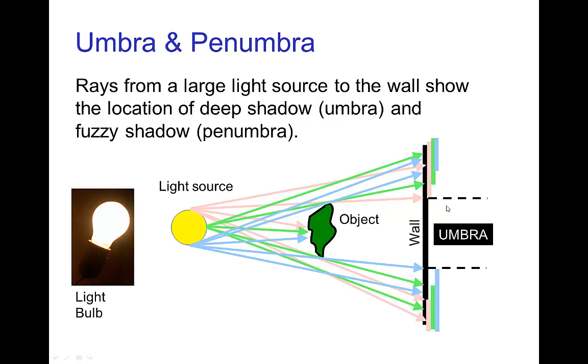In this case we still have some part of the wall which none of the light rays reach, and that is the umbra. But we have these other parts where the light rays from some area of the light source reach the wall, but not all of the light source reaches the wall. This part we call the penumbra.